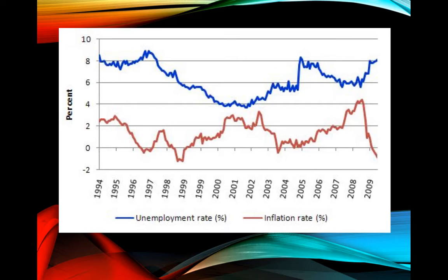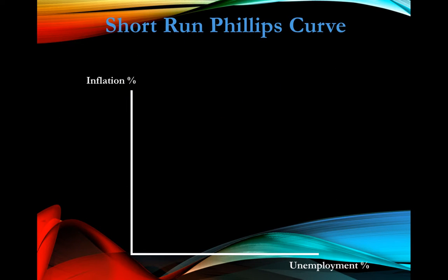Let's look at the short-run Phillips Curve. On the vertical axis you have the inflation rate, and on the horizontal axis you have the unemployment rate. This shouldn't be hard to remember because on our aggregate demand/aggregate supply graph, you have the price level on the vertical axis — basically the same as inflation — and output on the horizontal axis, which tells us about unemployment. So it's essentially the same labels, and you have a downward-sloping short-run Phillips Curve.